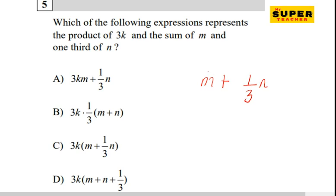Right, so the product, let's bracket it, and 3k. That's the product, so 3k times m plus one over three n. So the answer is C. What did you get? Well done.